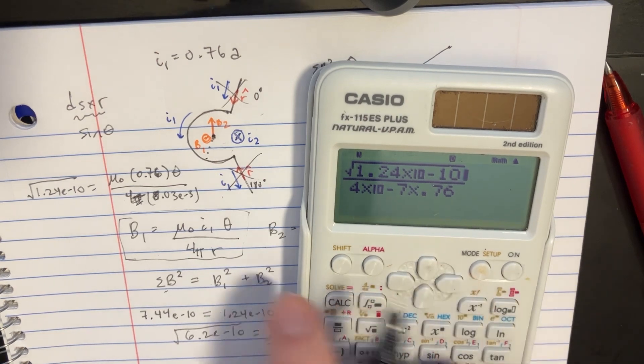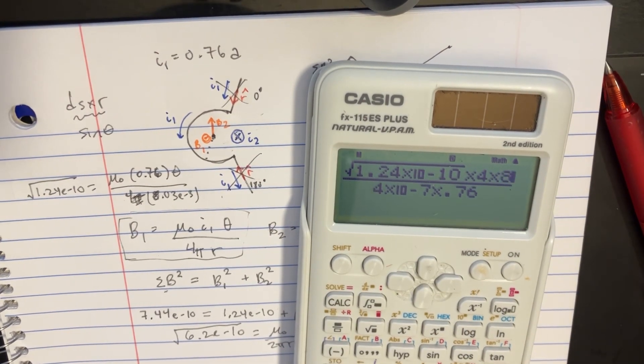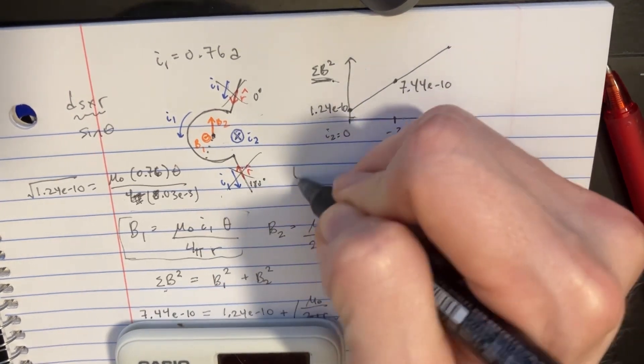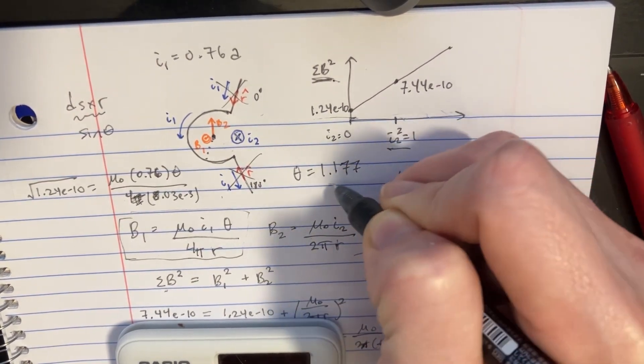And on the top, we're not done. We're going to multiply it by the 4 and 8.03, which was our answer. And there we go. So, we found that the theta is 1.177 radians.